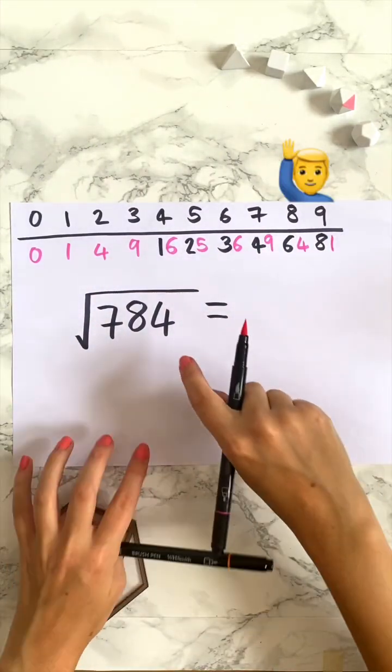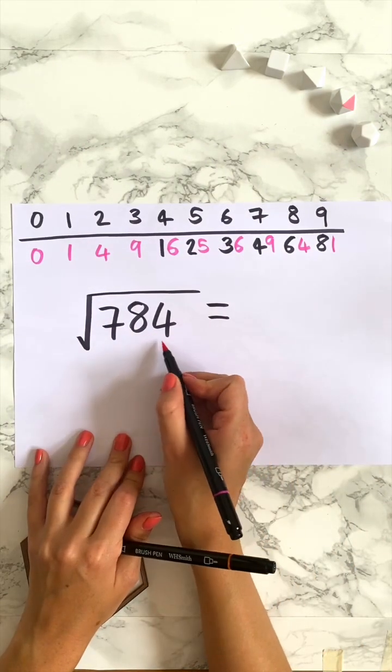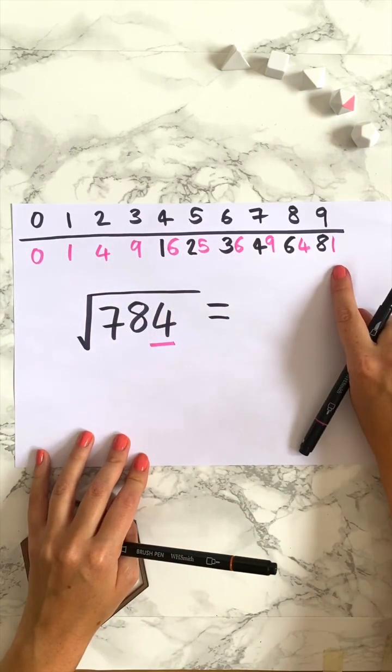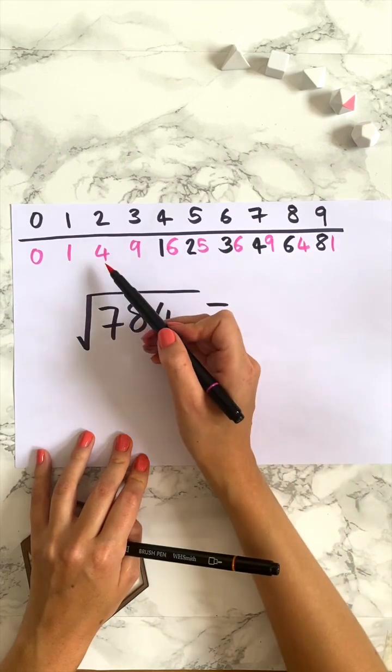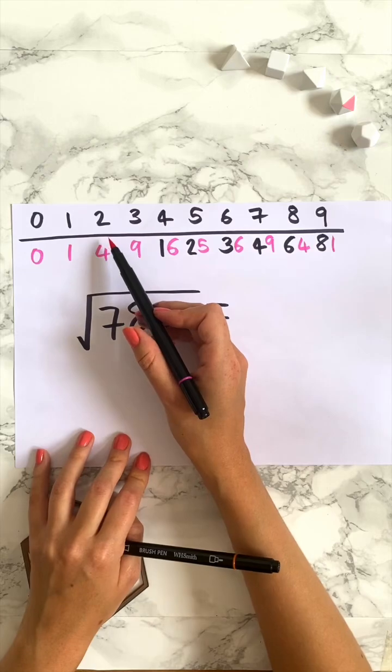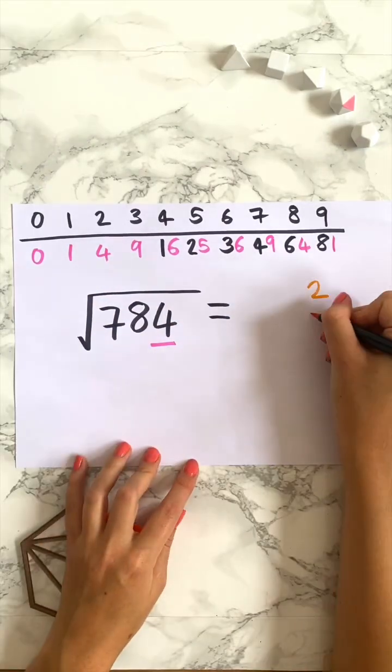Then say Dave asks you what the square root of 784 is. What you want to do is highlight the last number, the 4, and then you're going to look at your row of square numbers and find any that have final digit 4. So 64 and 4 both have last digit 4. These correspond to 8 and 2. So our final digit of our answer is either going to be 2 or 8.